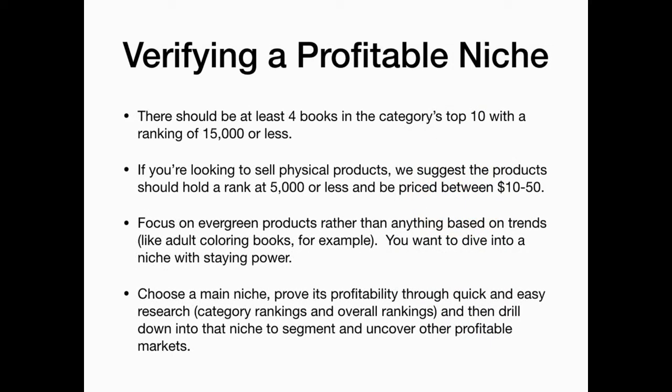Verifying a profitable niche is easy. There should be at least four books in the category's top 10 with a ranking of 15,000 or less. If you're looking to sell physical products, the product should hold a rank of 5,000 or less and be priced between $10 and $50. Focus on evergreen products rather than anything based on trends. Choose a main niche, prove its profitability through quick and easy research, and then drill down further to uncover other profitable ideas.